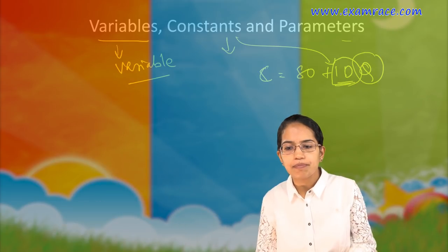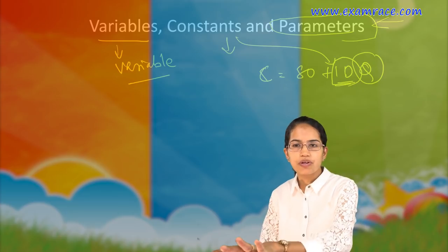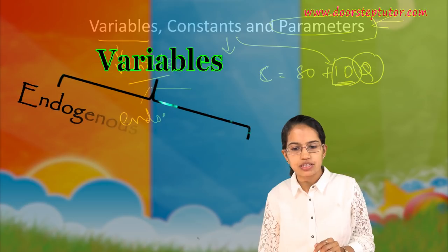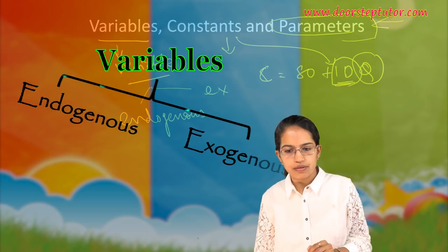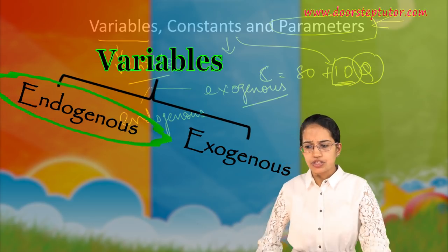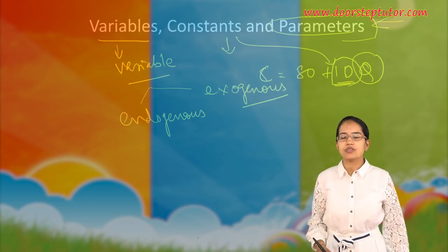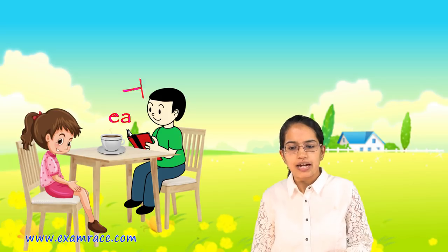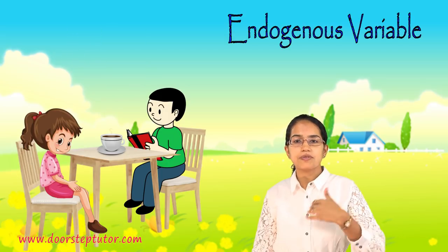Parameters are exogenous variables. Before we understand parameters, let's talk about two types of variables: endogenous variables and exogenous variables. Endogenous variables are those whose solutions are sought within the model. For example, in understanding the market for tea, the demand and supply of tea determine the price — these are the endogenous variables.